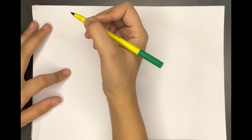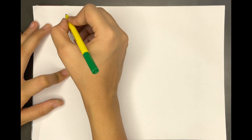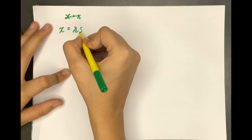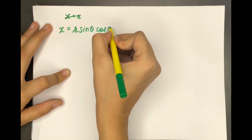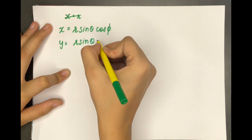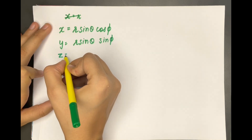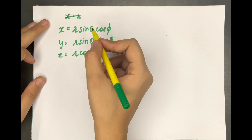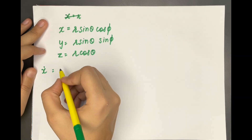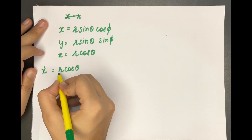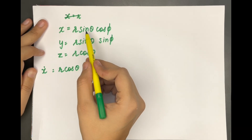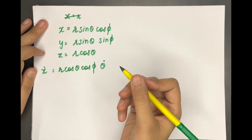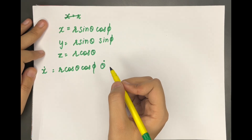We know the transformation equations from Cartesian coordinates to spherical polar coordinates: x = r sinθ cosφ, y = r sinθ sinφ, z = r cosθ. We are going to calculate ẋ, ẏ, and ż from this. So ẋ will be equal to r cosθ · θ̇ · cosφ, since r is constant and sinθ differentiates to cosθ · θ̇.